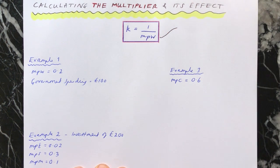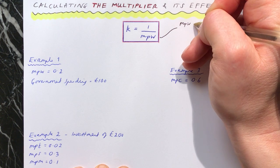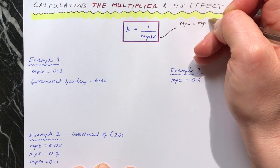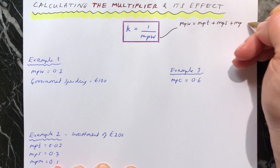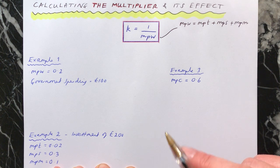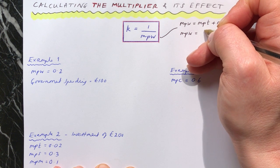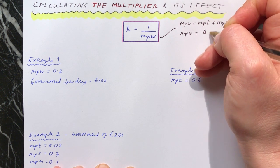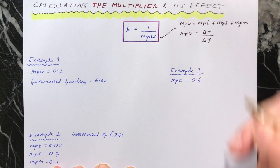The marginal propensity to withdraw can be expressed in different ways. We know first of all that the marginal propensity to withdraw equals the marginal propensity to tax plus the marginal propensity to save plus the marginal propensity to import, because those are the three types of withdrawal. The other thing you can say about the marginal propensity to withdraw is that it's the change in withdrawals divided by the change in income.